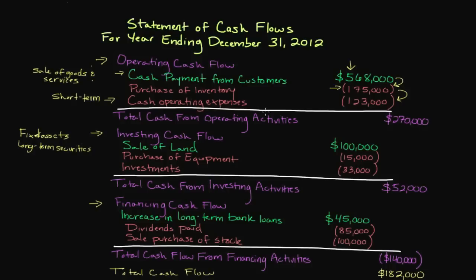Looking at the investing section entries: the company sold some land and generated $100,000 in cash. However, we have expenditures in parentheses — $15,000 spent purchasing equipment and $33,000 on investments, which are commonly long-term securities such as bonds and stocks. Taking the $100,000 cash inflow and removing the $15,000 and $33,000 in expenditures, we are left with $52,000 in cash specifically from investing activities.